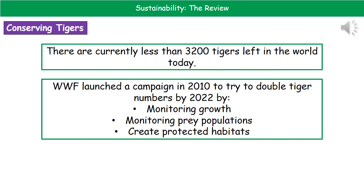If we consider tigers, which we've already mentioned are an endangered species, the reason they're endangered is because currently there are less than 3,200 tigers left anywhere in the world today. Back in 2010, the WWF launched a campaign to try to double tiger populations by 2022. The way they were planning to do this was by monitoring the growth of the tiger population and monitoring the populations of their prey species, so they could identify any issues with the food supply.